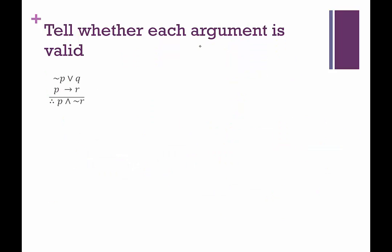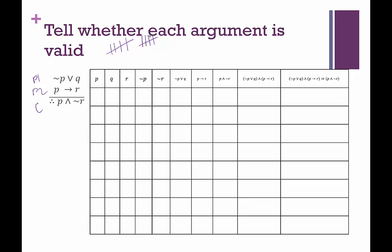Let's look at one more example. Please pause the video, try it on your own, see what you come up with. For this one, how many rows did you need? There were three simple statements — P, Q, and R — so we needed eight rows beneath the headers. How many columns do we need? We need P, Q, R, not P, not R, then premise one, premise two, the conclusion, the conjunction of the premises, and lastly the implication — so ten columns in total.